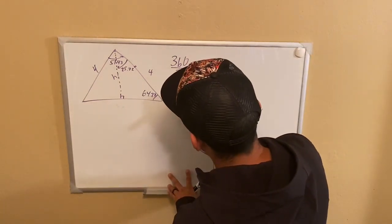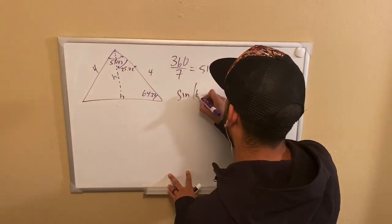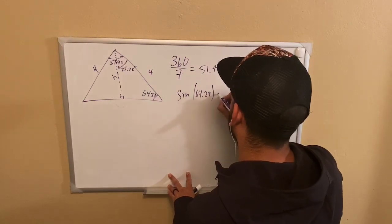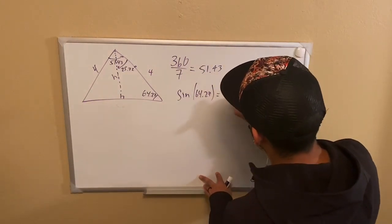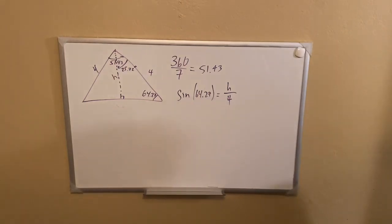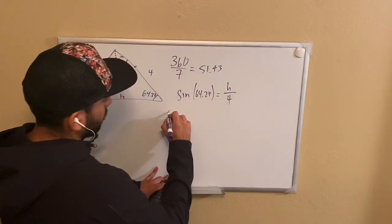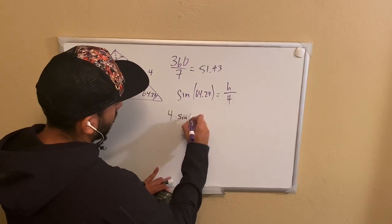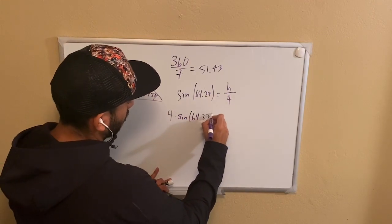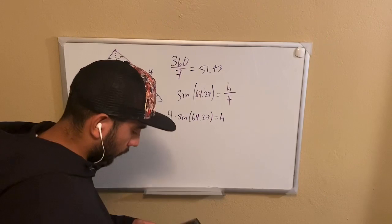We can use SOHCAHTOA. The sine of 64.27 is going to be equal to our opposite over our hypotenuse. How do we solve for H? Let's go ahead and multiply it from the other side. We get 4 times sine of 64.27 is equal to the height.